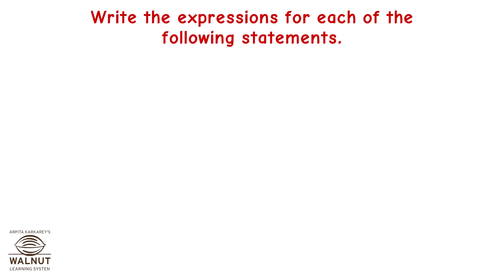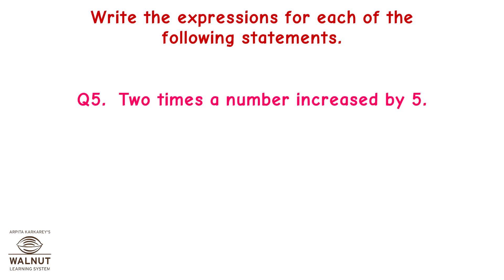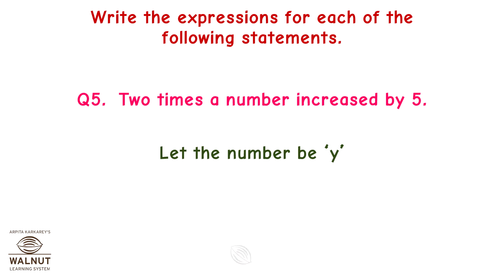Write the expressions for each of the following statements. Question 2: P is multiplied by 6 and then 12 is added to the result. That gives us 6P plus 12. Question 5: 2 times a number increased by 5. Let the number be Y. Hence we get 2Y plus 5.